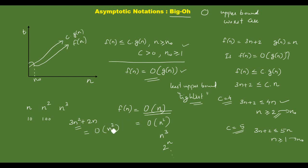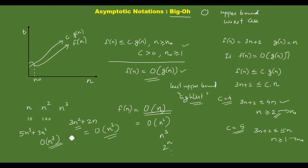For a polynomial like 3n squared plus 2n, the highest power is n squared — that is the Big O notation answer: O(n²). In another example with 5n cubed plus 3n squared, the highest power is n cubed, so this function is order of n cubed: O(n³).